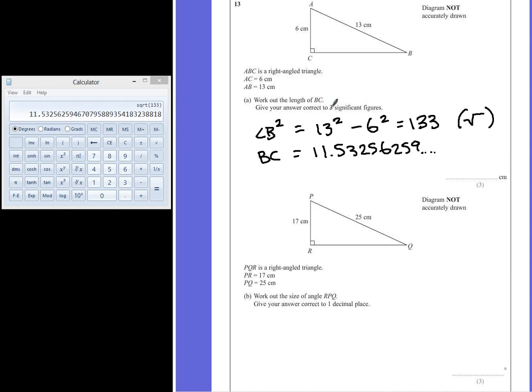But we're supposed to give our answers correct to three significant figures. So if we count from the beginning, 1, 2, 3, we're going to round off our answer after the third significant figure. The number after the line is smaller than 5, so it stays as it is, which is 11.5cm.